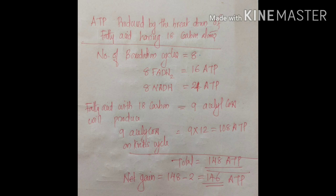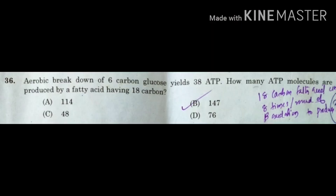The total ATP produced by the breakdown of the 18-carbon fatty acid is 16 + 24 + 108 = 148 ATP. But from this 148 ATP, you have to subtract 2 ATP because 2 ATP are consumed for the activation of the fatty acid. So 148 − 2 = 146 ATP. Look at the answer options again — we got 146, but in the options you can find only 147.